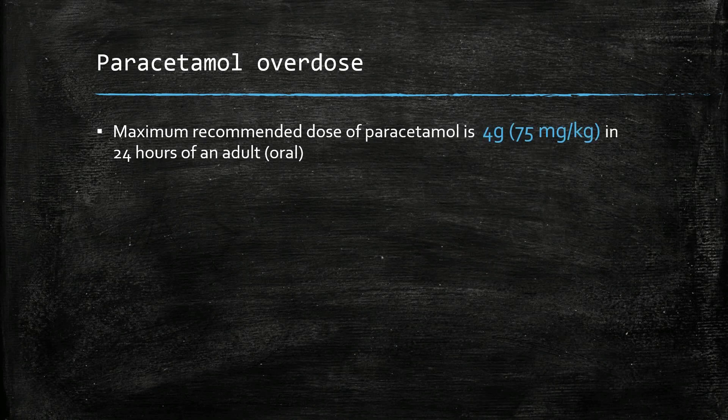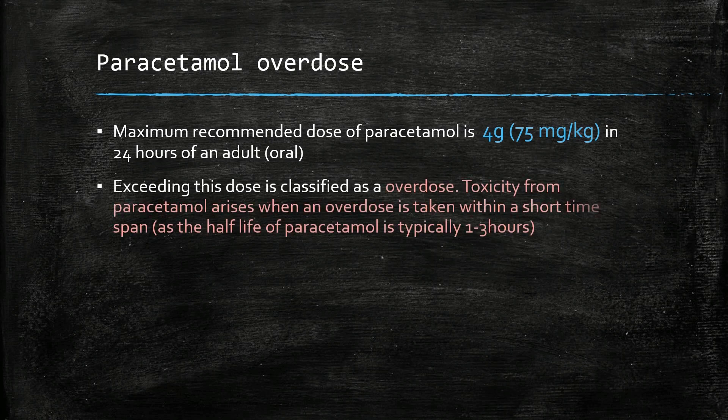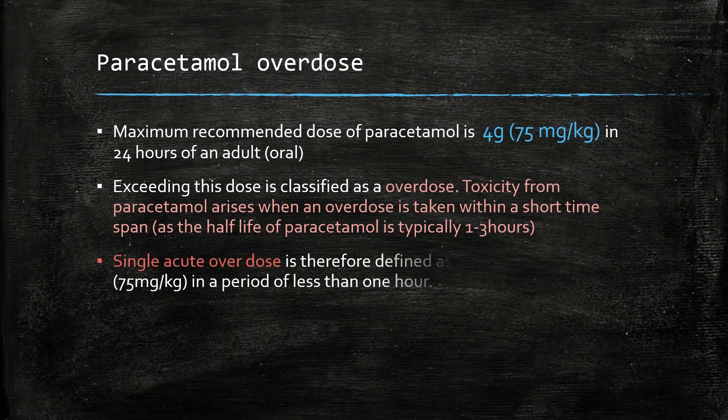The recommended dose of paracetamol is 4 grams in 24 hours. Anything above this value is deemed an overdose. A single overdose is defined as taking more than 4 grams of paracetamol in a period of less than one hour, whereas a staggered overdose is an overdose taken beyond one hour.